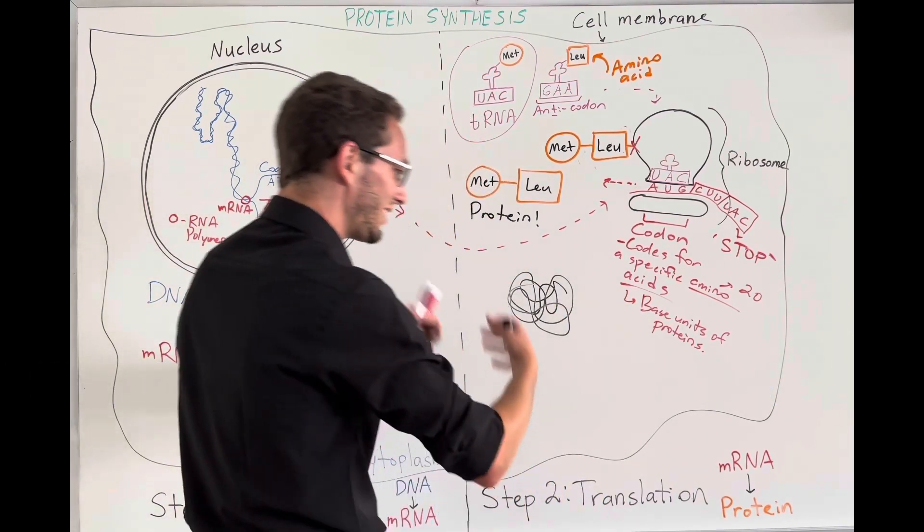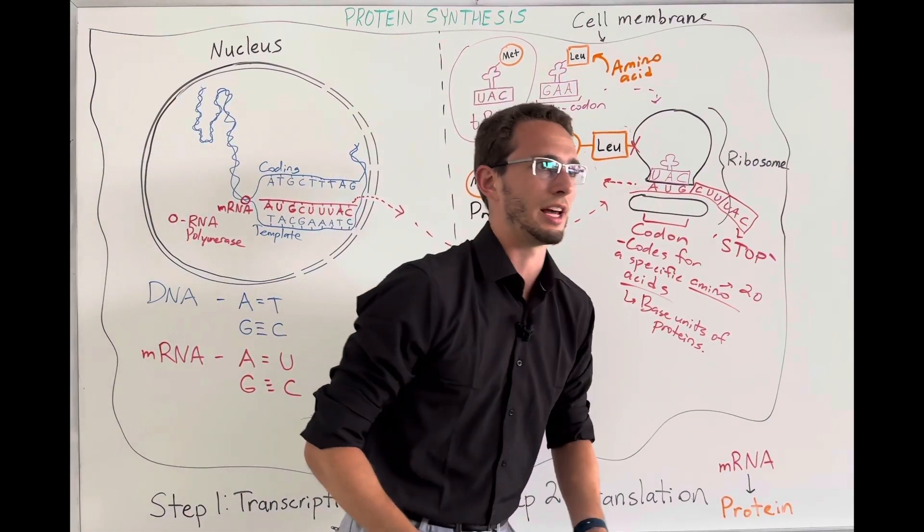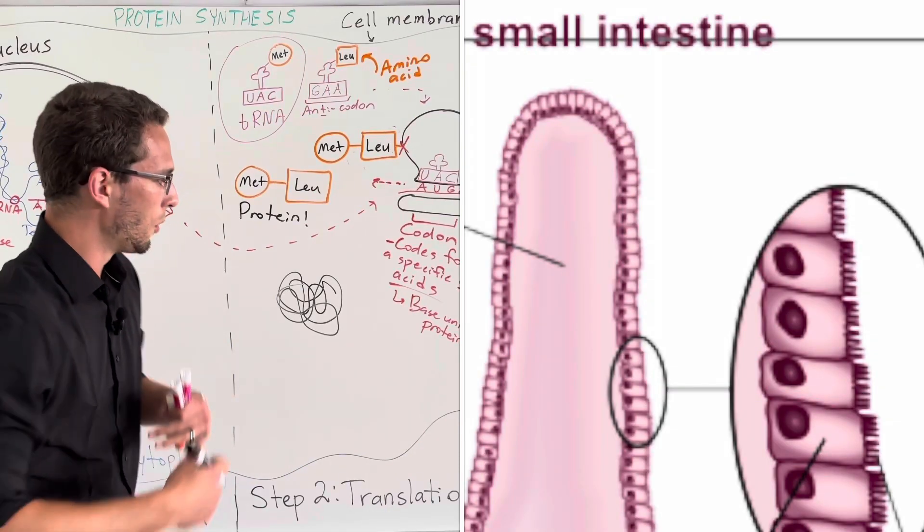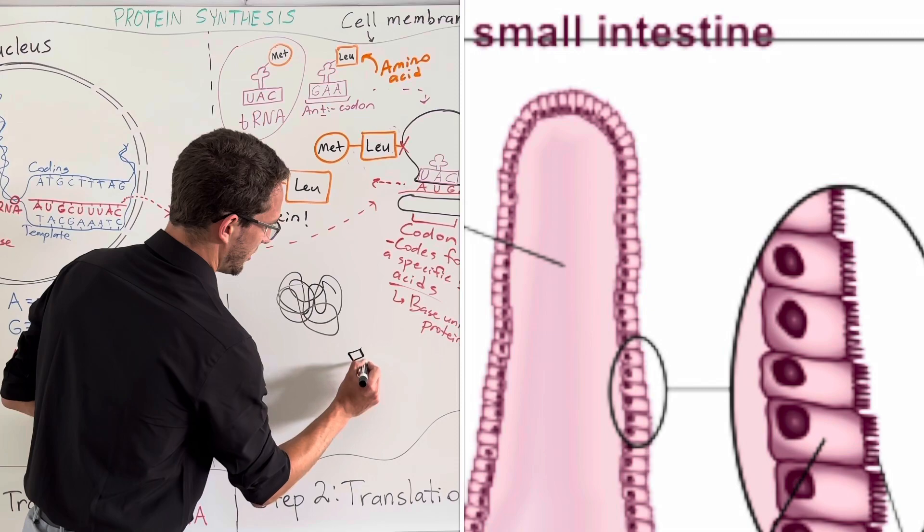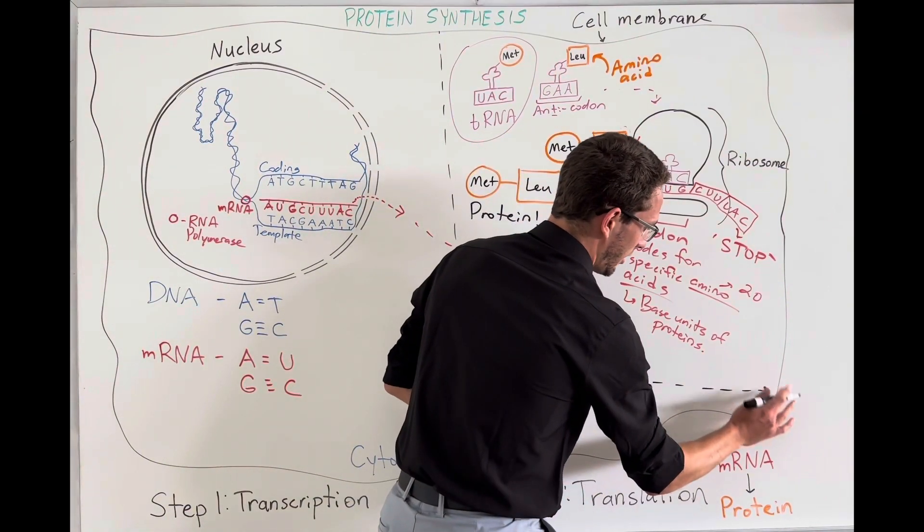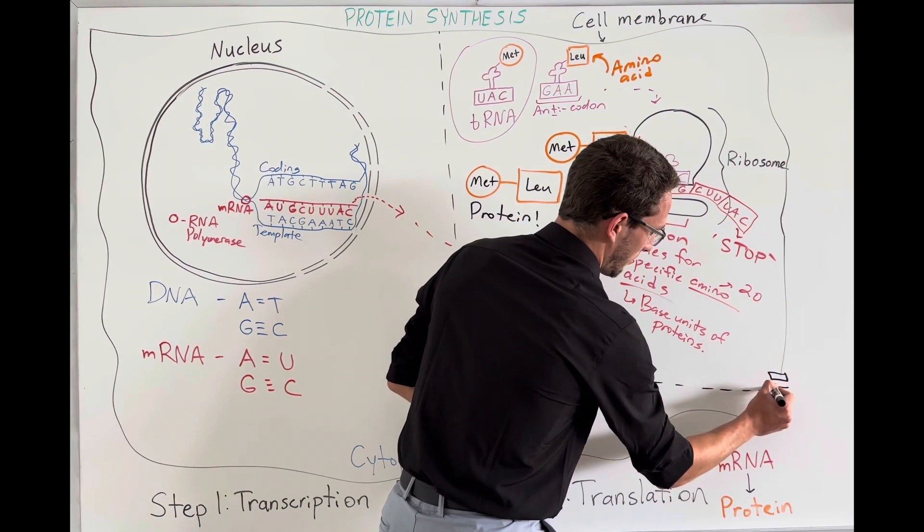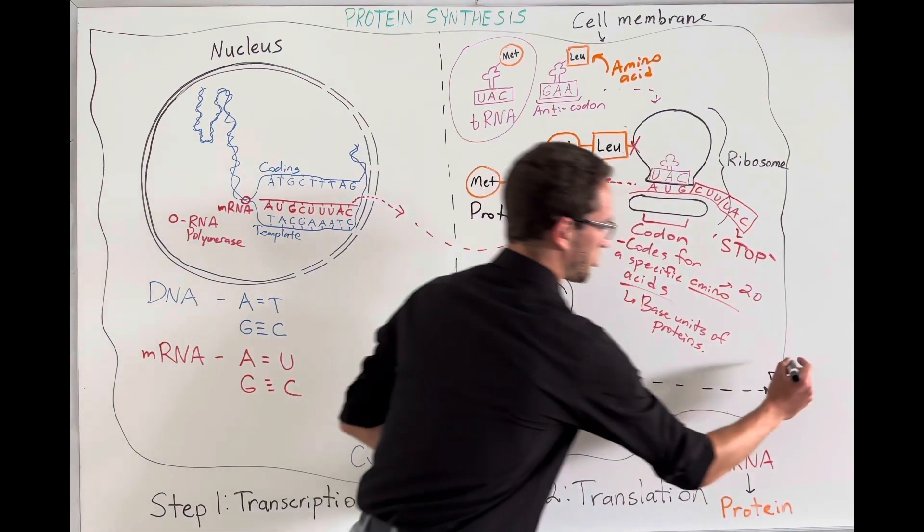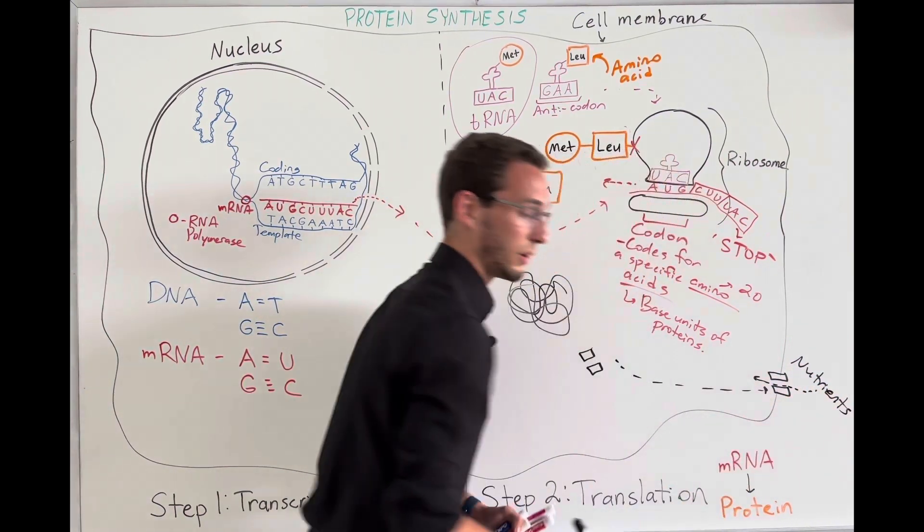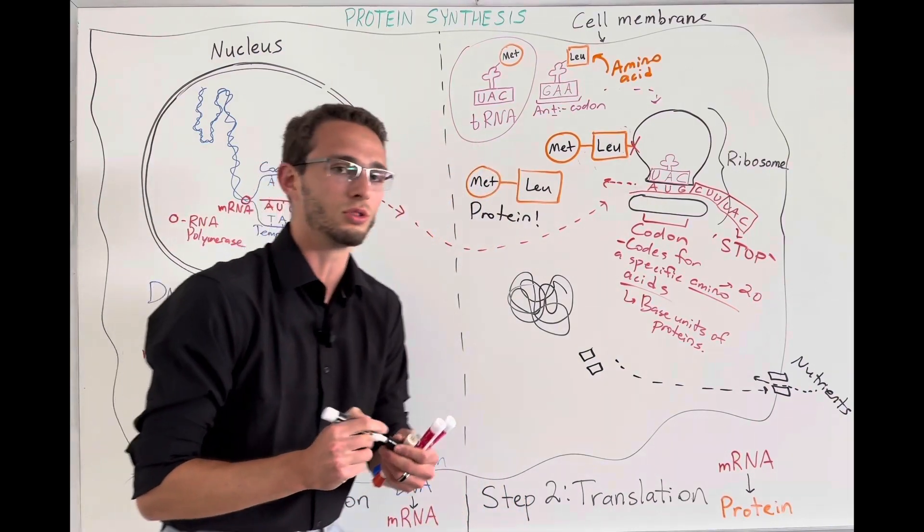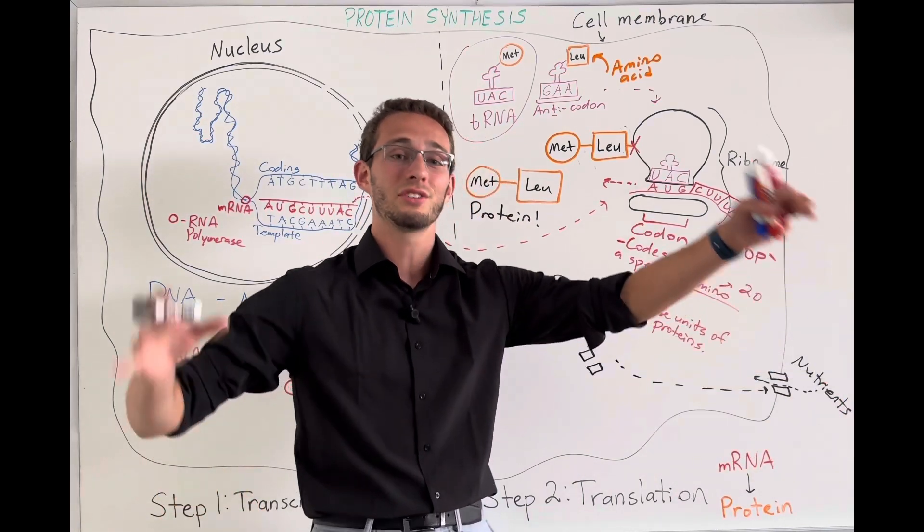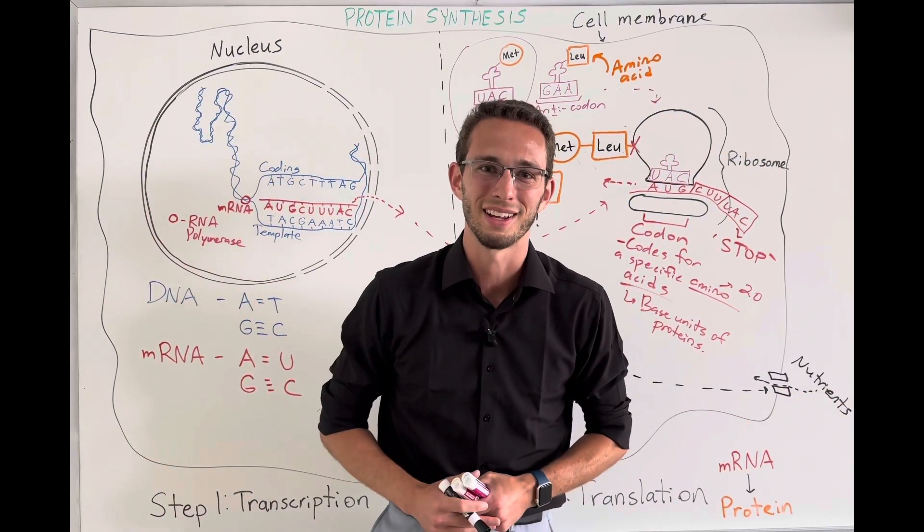So for example, let's say this is a cell that needs to bring in, for example, some nutrients from the outside. So maybe it's lining your intestines, right? Well, maybe we'll make a protein that will look something like this, like a gate. And maybe that gate will go out here and embed itself in the cell membrane so that then nutrients like glucose or amino acids could actually pass into it to nourish your body. So these proteins do literally everything for your cells, give you all the functions of your cells, therefore giving you a functional working human body.